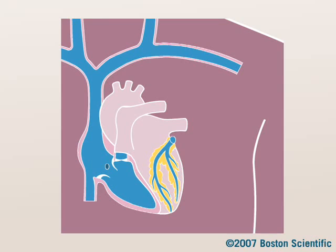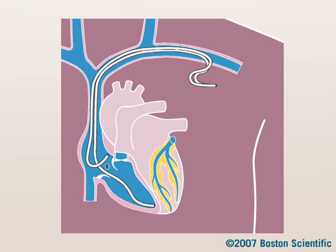An ICD system typically includes two leads and a device. Your doctor makes a small incision near your collarbone and inserts the leads, gently steering them through your blood vessels and into your heart. A lead is placed in the right ventricle, and another lead is placed in the right atrium.